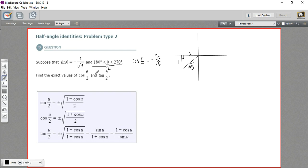If we do that, we get theta over 2 in the middle. 180 divided by 2 is 90. 270 divided by 2 is 135. So in fact, theta over 2 is somewhere between 90 and 135, which would be here. So it's somewhere in here.